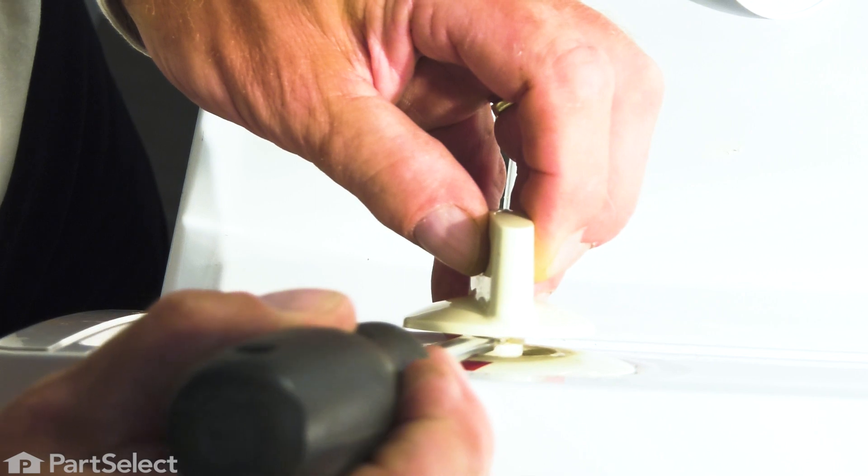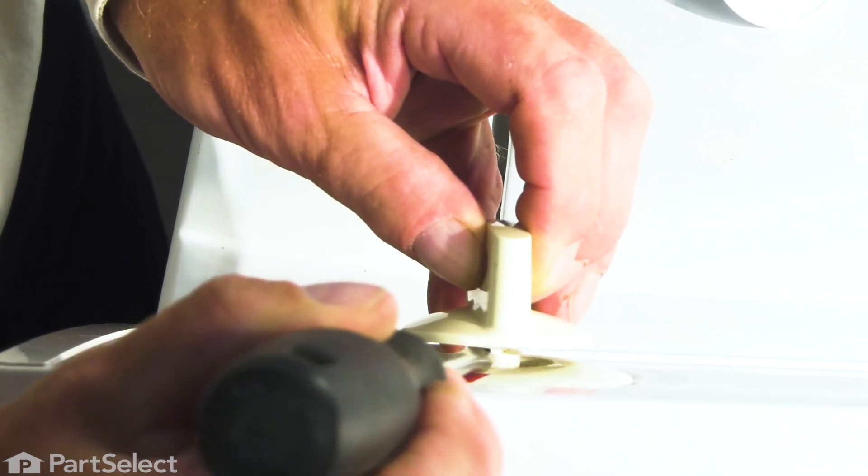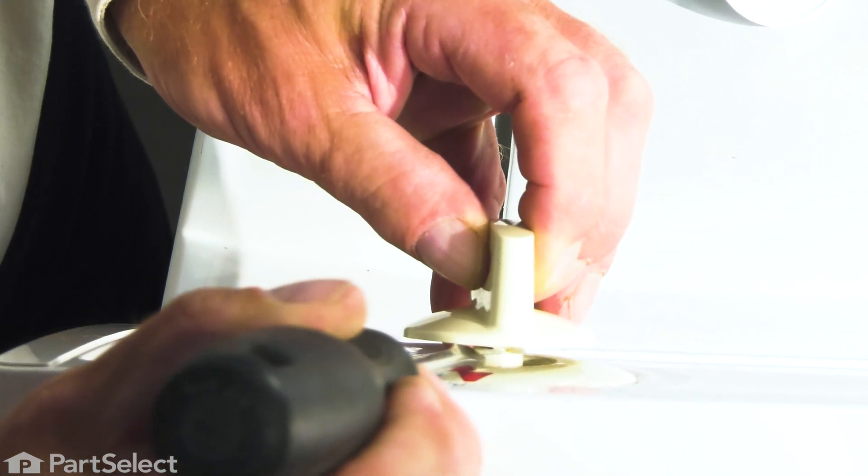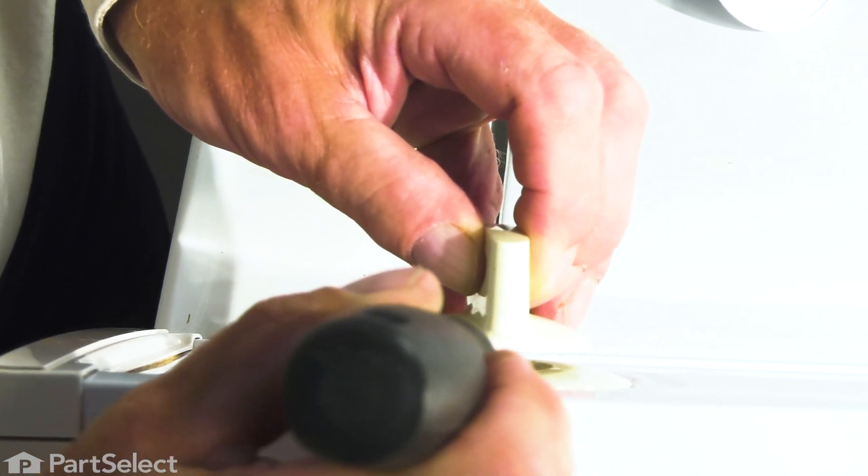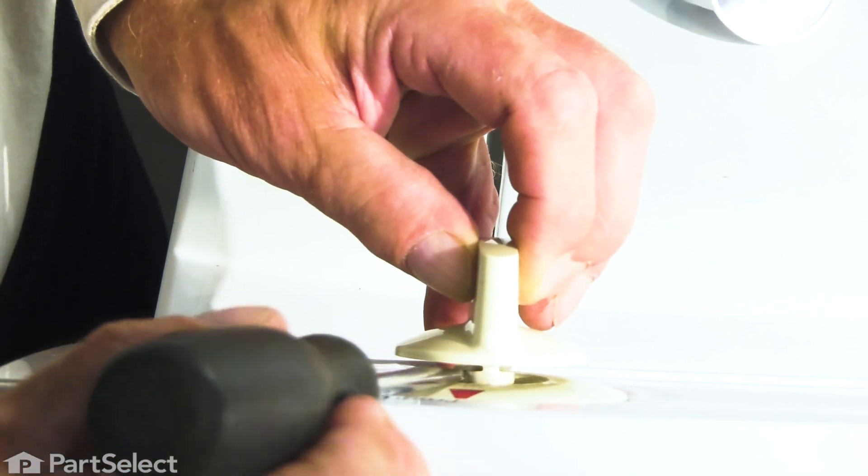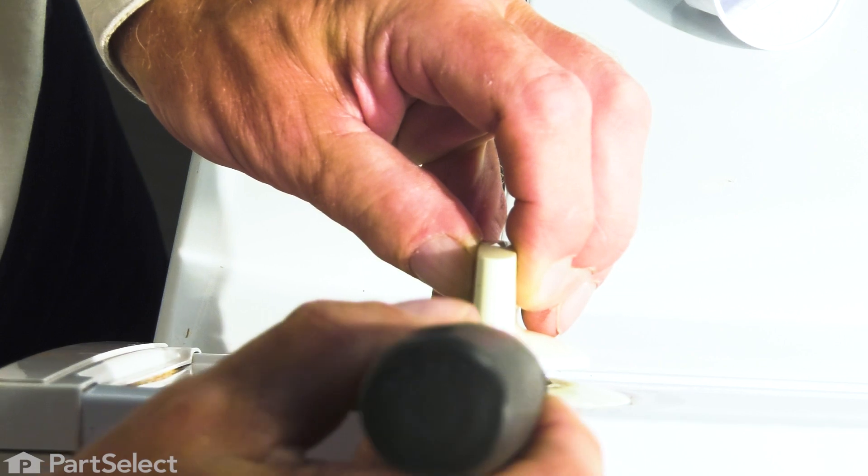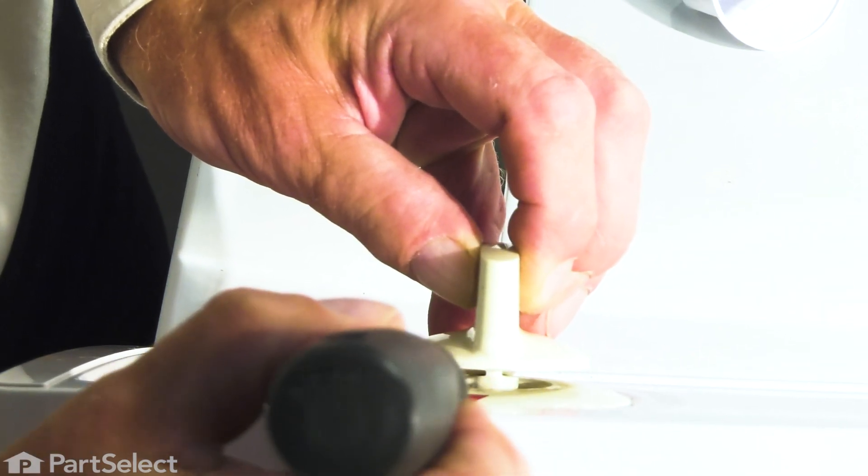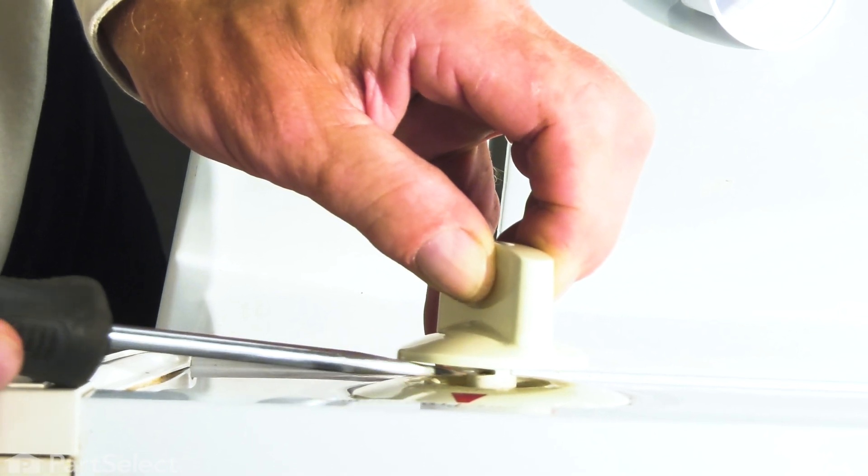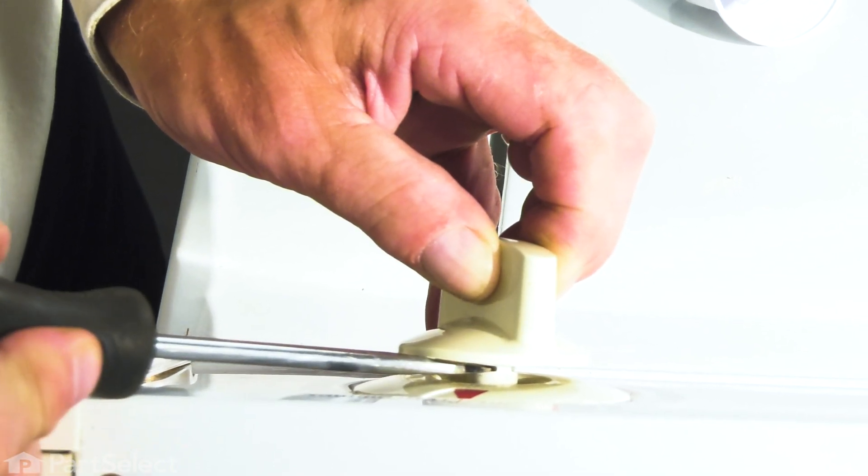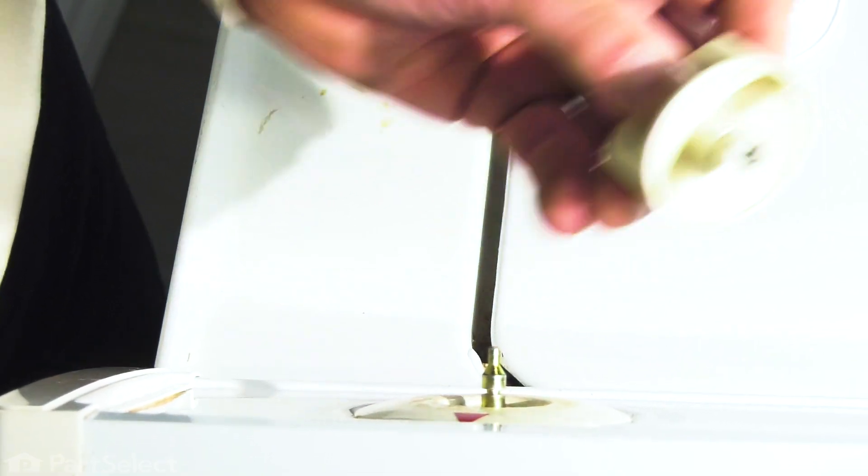Take a blunt flat blade screwdriver and push that clip away from the shaft, as far down as you can on either side. The knob will then slide right off.